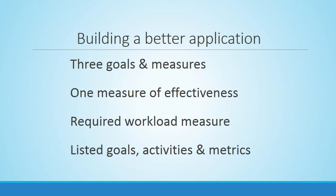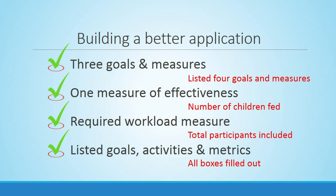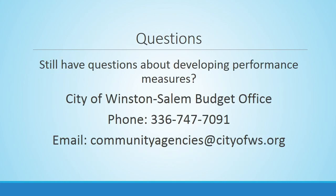In this example, we checked all the boxes for creating a successful application: at least three measures, effectiveness measured as the number of children fed, workload measures indicating the number of unduplicated participants, and the goals, activities, and performance data sections completed. If you can check all of these boxes on your application, you should meet the minimum requirements for the performance section. If you have any questions or need additional assistance developing performance metrics, do not hesitate to contact the City's Budget and Evaluation Office at the phone number or email address listed on the screen. I hope this has been helpful. Good luck on your application, and thank you for making a difference in our community through the services you provide.